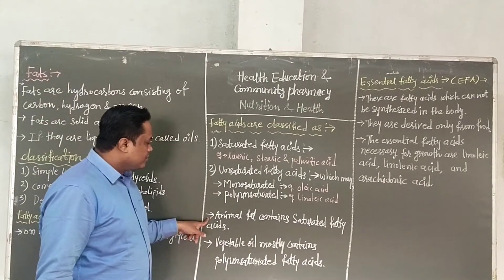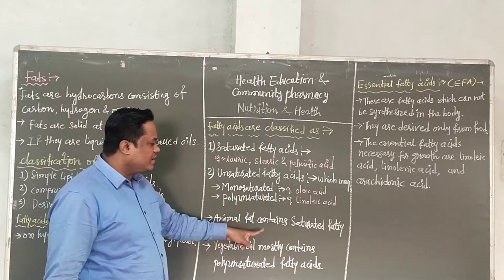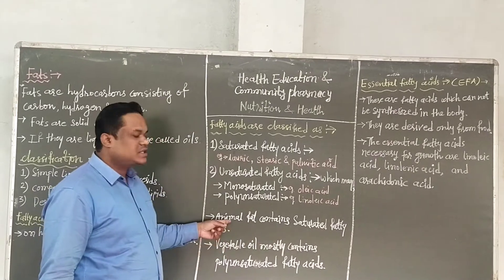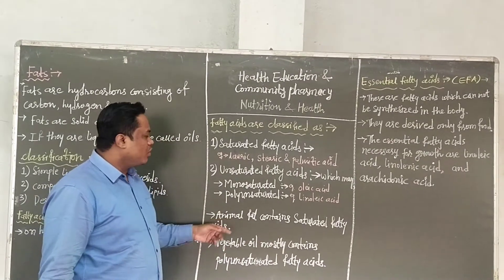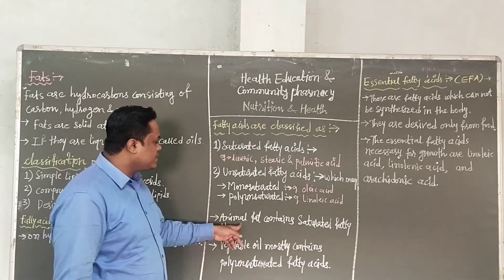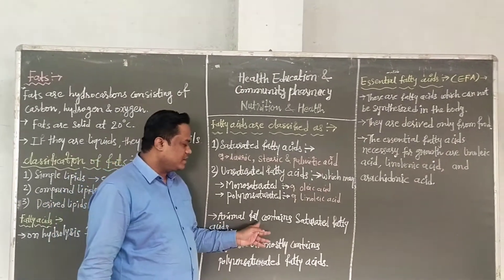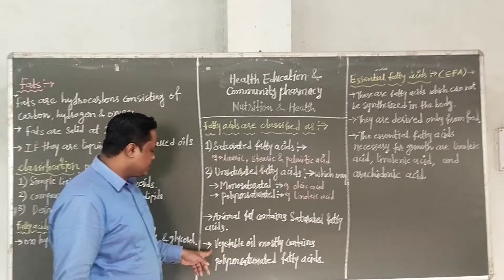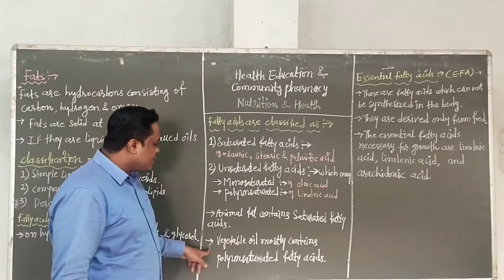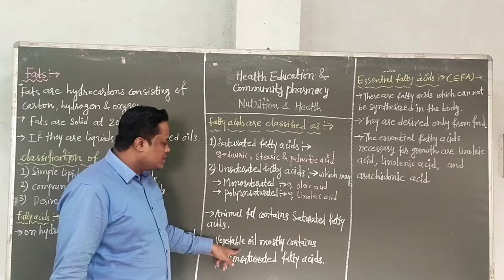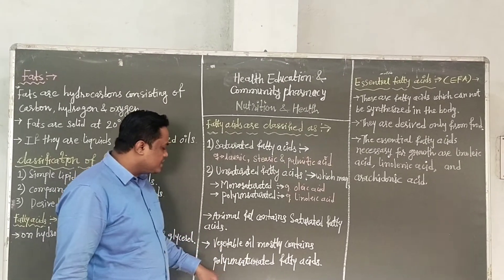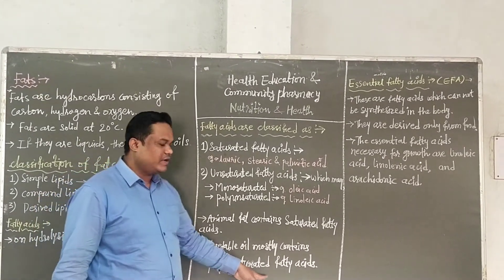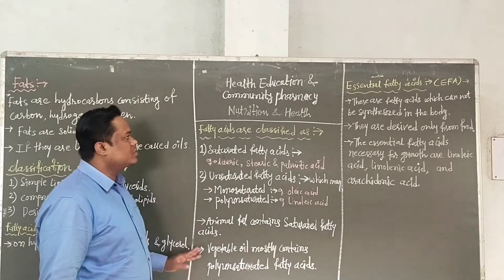Animal fat contains saturated fatty acids — that is the source. And second, vegetable oils mostly contain polyunsaturated fatty acids — that is also a source.